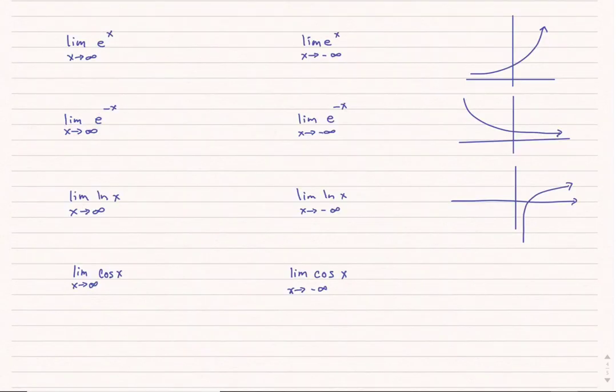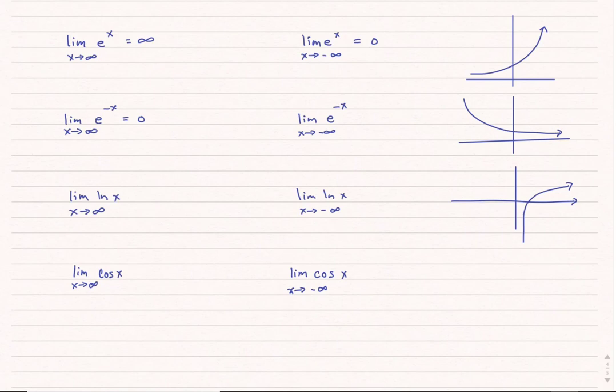Let's quickly cover four special functions. For e to the x: the limit as x goes to infinity is infinity, and the limit as x goes to negative infinity is 0. For e to the negative x (which is 1 over e to the x): as x goes to positive infinity, it goes to 0, and as x goes to negative infinity, it goes to infinity — the exact opposite of e to the x.